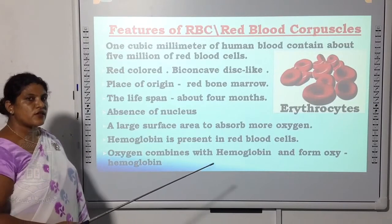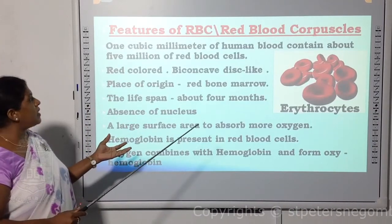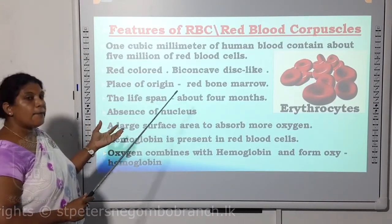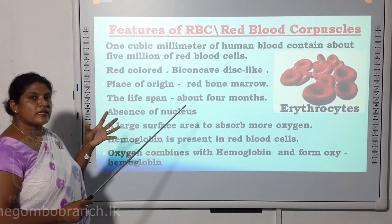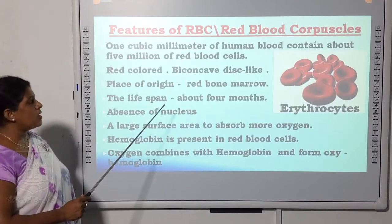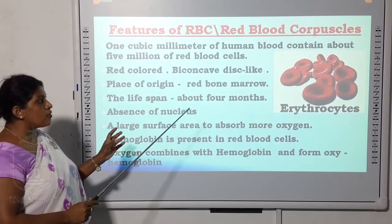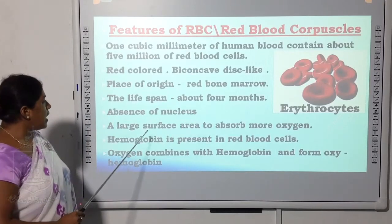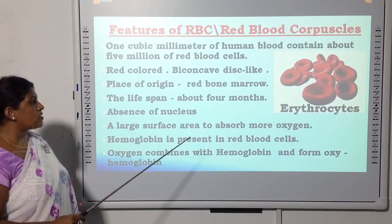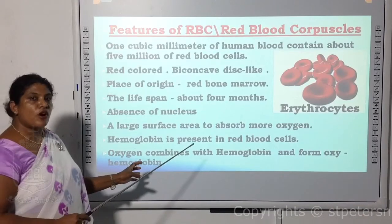Now we will discuss the features of RBCs or red blood corpuscles. If we take one cubic millimeter of blood, it contains about five million RBCs. The color is red, with a biconcave disc-like structure. The place of origin is red bone marrow, and lifespan is about four months. They have no nucleus, which gives them the ability to squeeze through blood vessels. They have a large surface area to absorb more oxygen. Hemoglobin is present — that is why the cells are red — and hemoglobin carries oxygen, combining with it to form oxyhemoglobin.